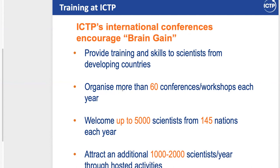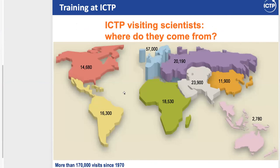We hope that soon we will have many more such programs here again in person. In normal years, we would welcome up to 5,000 scientists per year to these activities, also as visitors and postdocs. As you can see, they come from all over the world — it's always many people from all over the world coming to our programs.